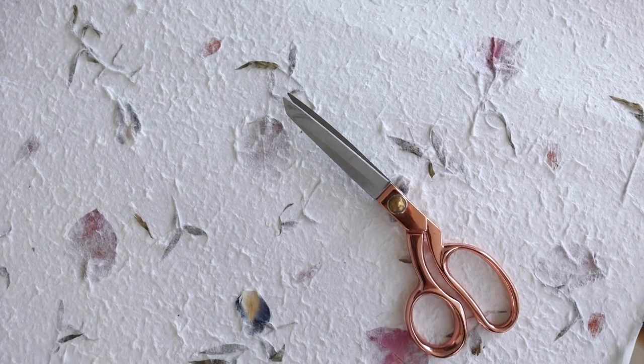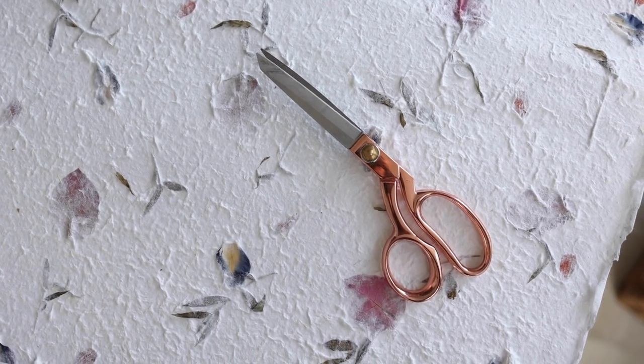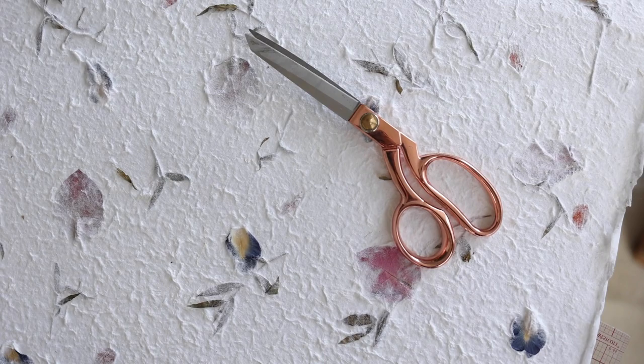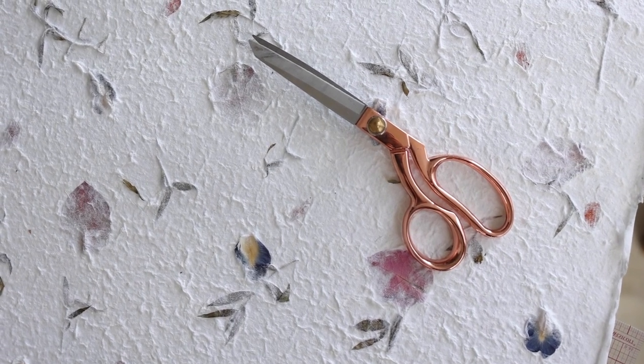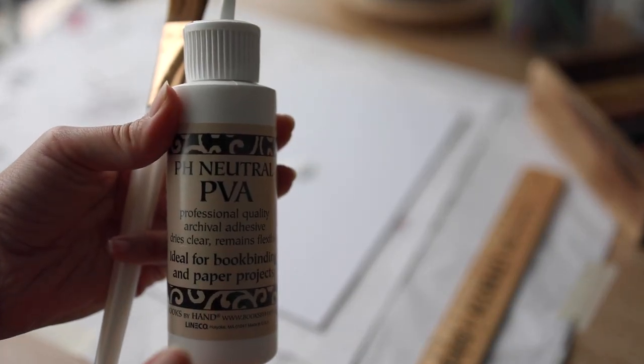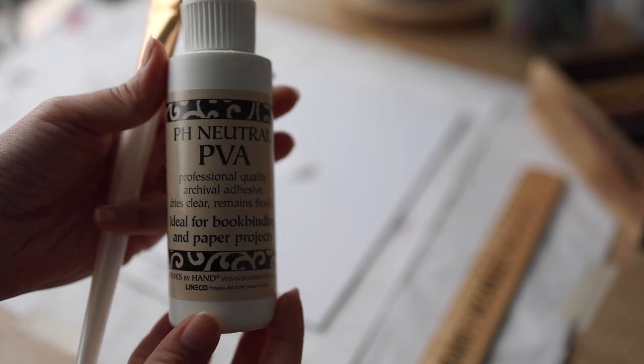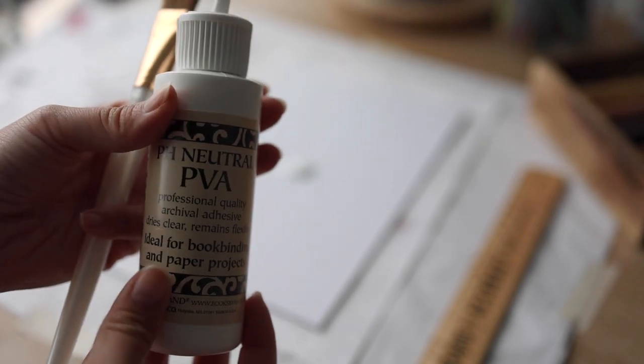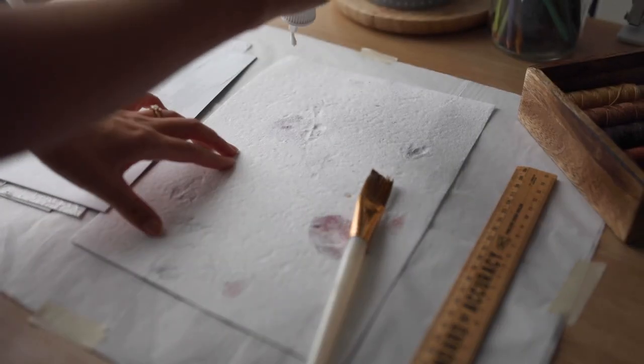I got this pretty pressed flower paper from my local art store. They have hangers full of handmade paper and they're just all so cool. After cutting the book cover paper about an inch larger than the chipboard all around, I'm ready to glue it down now with some pH neutral glue.